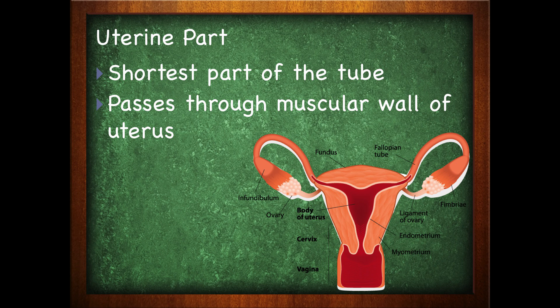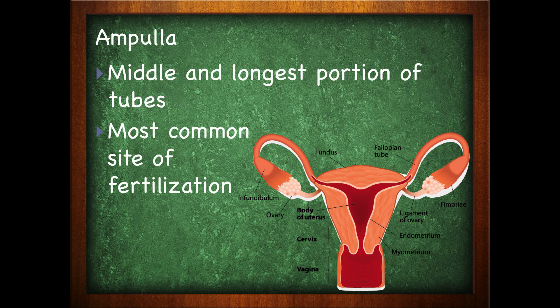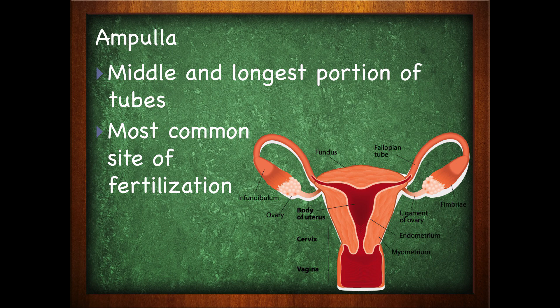The uterine part is the shortest part of the tube and passes through the muscular wall of the uterus. The isthmus is a narrow portion that connects to the uterus. The ampulla is the middle and longest part of the tube, and it's the most common site of fertilization. When I took my embryology course, that was always an excellent exam question: where does fertilization most likely occur? The answer is the ampulla — a good term to be familiar with.